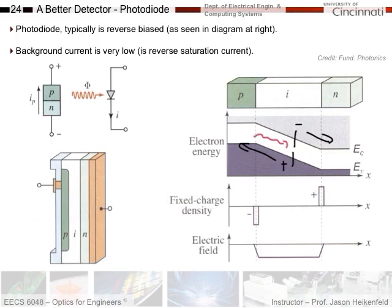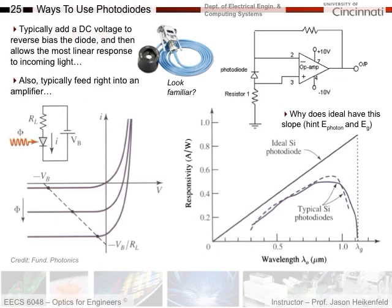Here's a typical P-I-N photodiode — the light absorption that matters is between the P and N-type materials. You add a DC voltage source to reverse bias the diode, which gives you the most linear response. Here's an IV plot for a diode: as you increase light, the amount of current increases proportionally. That's great because it gives you a nice linear response — if the current doubles or triples, the amount of light has doubled or tripled.